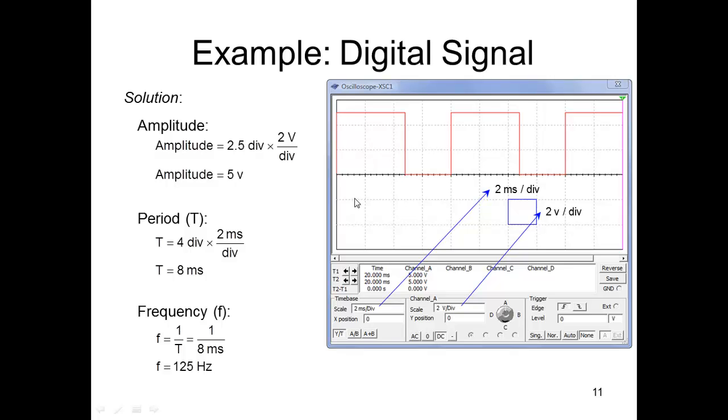The frequency would be one divided by that, but we have to change milliseconds to seconds. So don't do one divided by eight, do one divided by 0.008, and you'll get 125 hertz. Eight milliseconds would be 0.008 seconds.